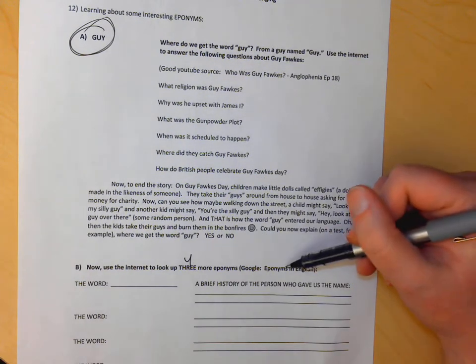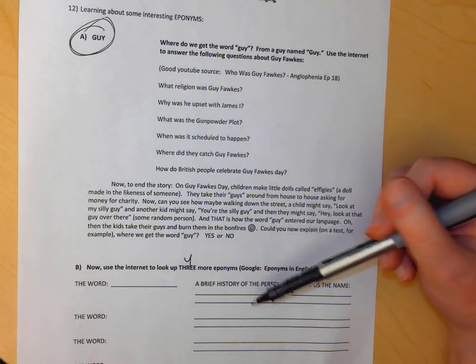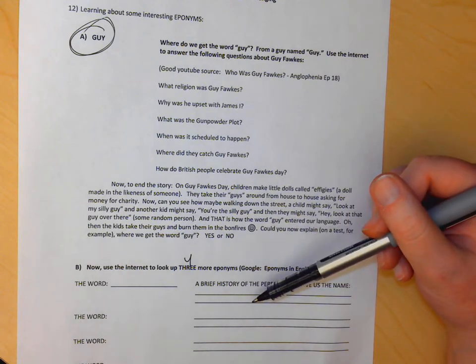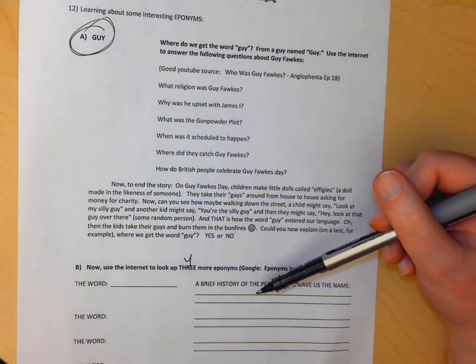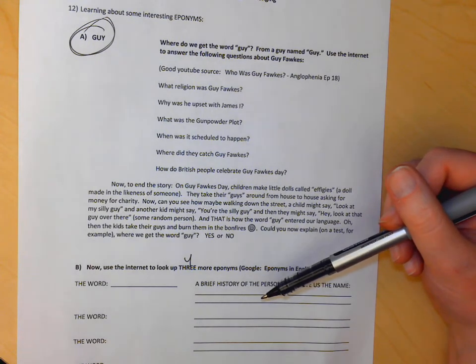Google something like eponyms in English, and you're going to find more interesting little histories about people who got their names to something, like the Earl of Sandwich who invented the sandwich.